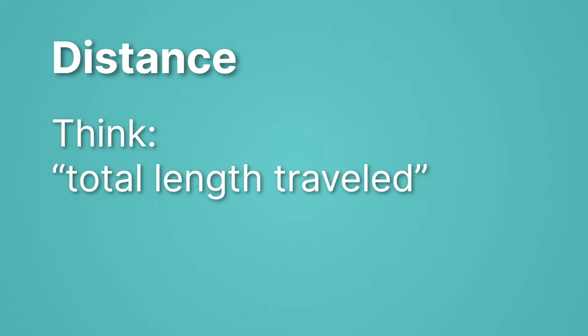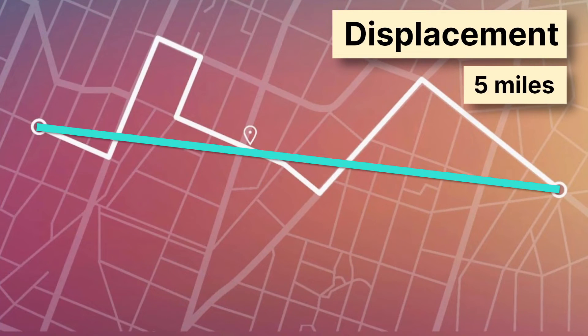On the other hand displacement is really similar but not quite the same. Here notice the teal line which represents displacement is shorter. It's just five miles. It goes from the starting point to the ending point but it goes in a straight line. That's the trick with displacement.